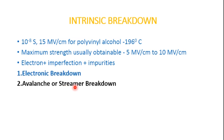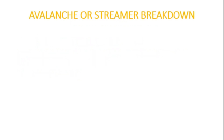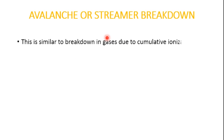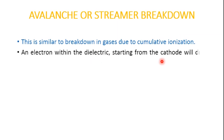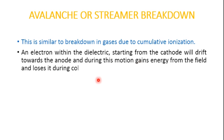Coming to the second type — avalanche or streamer breakdown. This is similar to breakdown in gases due to cumulative ionization. Breakdown occurs when the electron avalanche bridges the gap between the two electrodes. An electron within the dielectric starts from the cathode and drifts toward the anode, gaining energy from the electric field and losing energy due to collisions. When the energy gained exceeds the ionization potential, additional electrons are liberated — this is the first ionization coefficient process — resulting in formation of an electron avalanche.